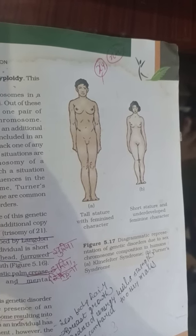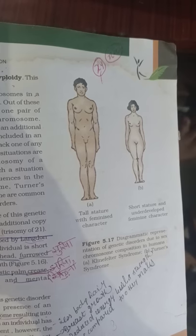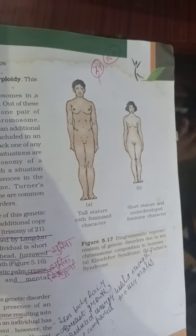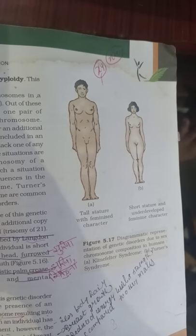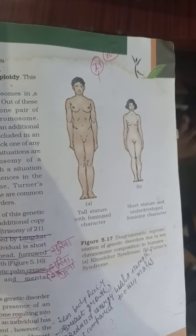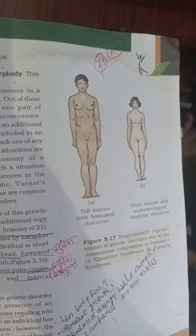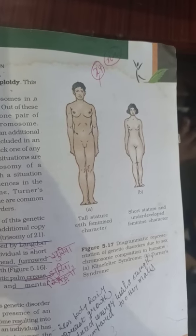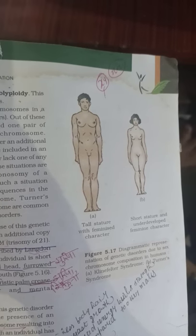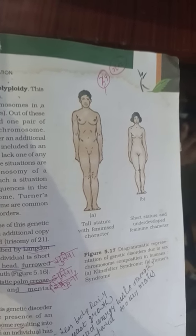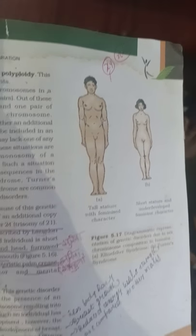The first diagram shown is of Klinefelter syndrome, and the second diagram shown is of Turner syndrome. Down syndrome does not have a diagram here, but its features have already been explained. The second disorder is Klinefelter syndrome.